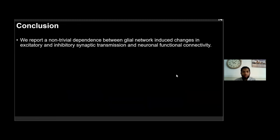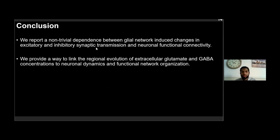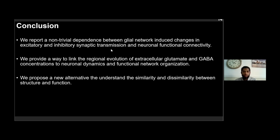What this study shows is a non-trivial dependence between glial network-induced changes in excitatory and inhibitory synaptic transmission and neuronal functional connectivity. We also provided a way to link the regional evolution of extracellular glutamate and GABA concentration to neuronal dynamics and functional network organization, and we propose a new alternative to understand the similarity and dissimilarity between structure and function. Neuronal structural connections should be seen as a set of potential connections shaped by context — in our example, the context given by the dynamics of glutamate and GABA concentration from the competition between release and uptake from glia and neurons.